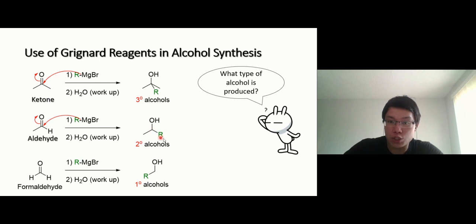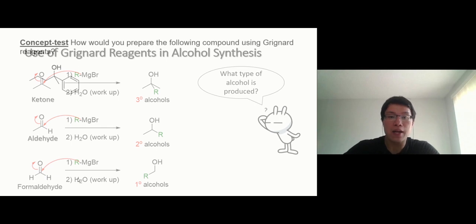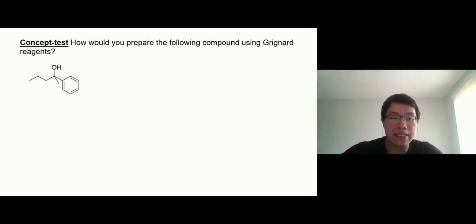Secondary alcohol wants to have two alkyl groups on it. The Grignard is going to add one more. So the starting material needs to have only one, cannot have two or more. And the last one, the Grignard is going to add the only one alkyl group on it. So before the reaction happens, this carbonyl carbon cannot have any alkyl group on it. This is how we can use it. So how do we synthesize this guy?